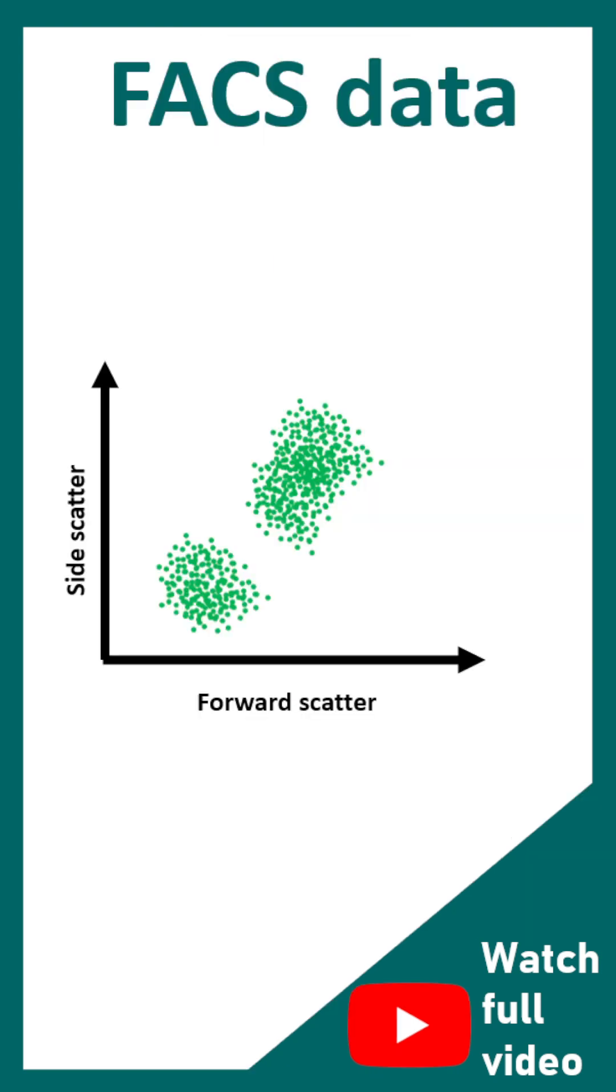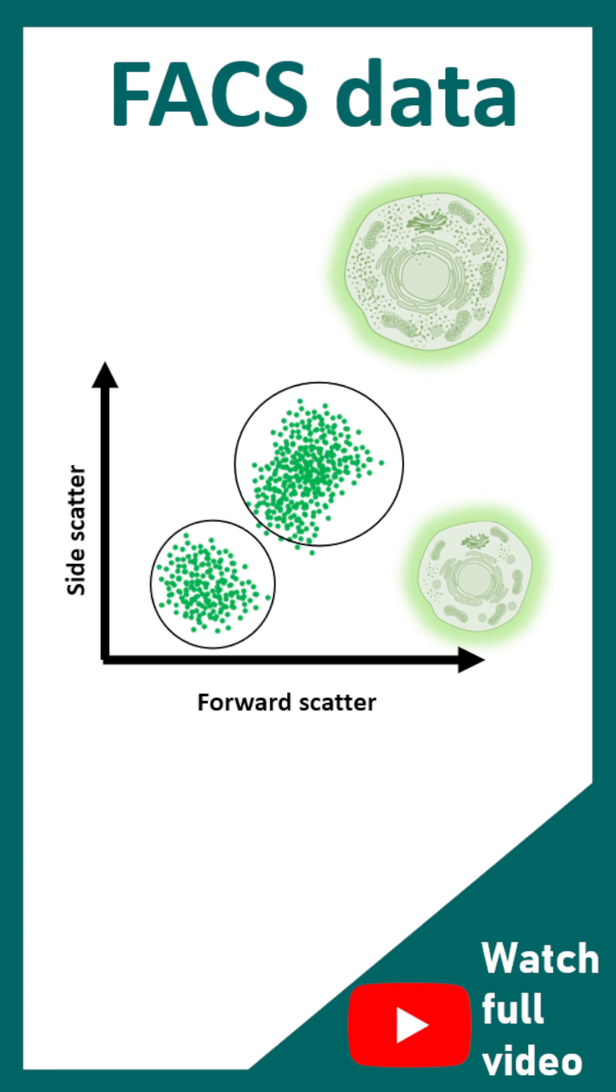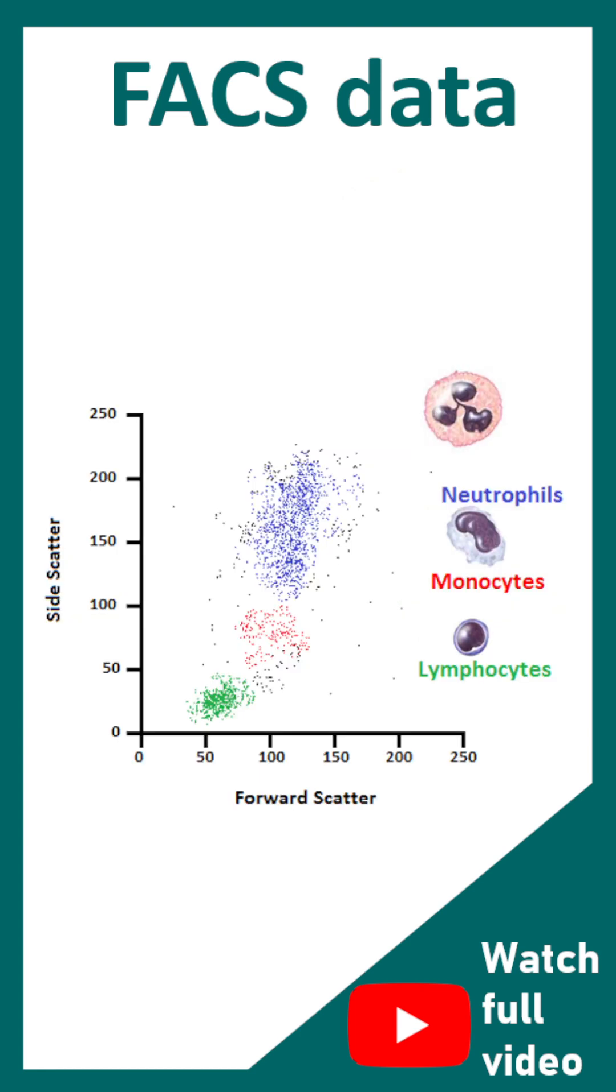Now let's try to understand the FACS data. In this particular population, you can see a cell which is much bigger and granular compared to this particular population. Using this technique, one can understand the different types of blood cells and their cohorts, the composition of blood.